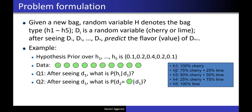The bags H1 through H5 are given. Given a new bag, the random variable H denotes which bag it is — we don't know which one has been given to us. We pick up one candy; DI is the random variable representing one example in classification. Cherry and lime are the supervised labels of that example. After looking at N candies, one problem is: what is the flavor of the next candy? We want to predict the flavor of the next candy after taking N candies from the bag.